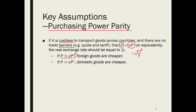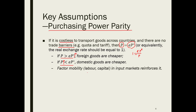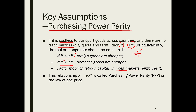On the other hand, if P is less than EP*, then domestic goods are cheaper, leading to excessive demand for domestic goods, which will push P higher until the market clears. Factor mobility across borders in the input market will just reinforce the parity in the output market. This simple relationship P equals E multiplied by P* is called purchasing power parity, or the law of one price.